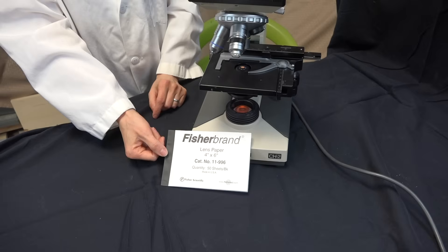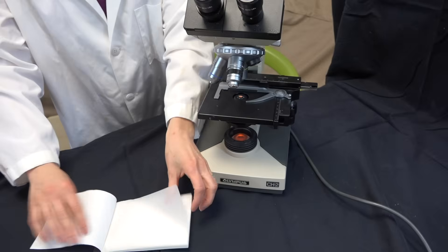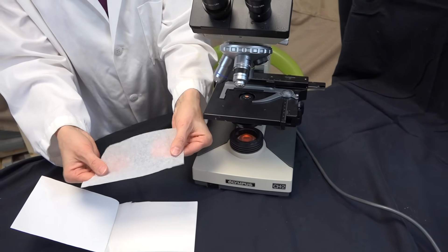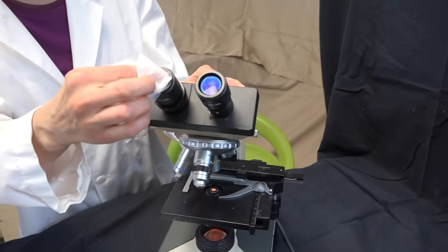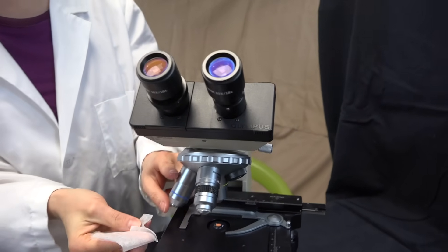When you're finished using the microscope make sure that you clean it. To clean it you will use lens paper. Remove a sheet of lens paper and you can wipe off the oculars and you can also wipe off the objectives.